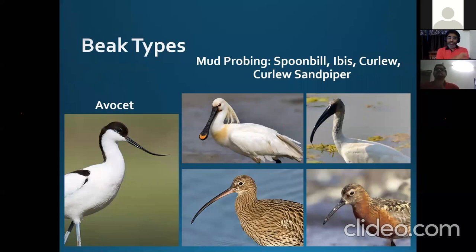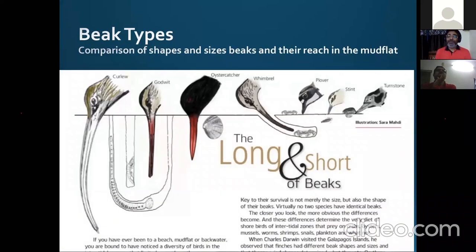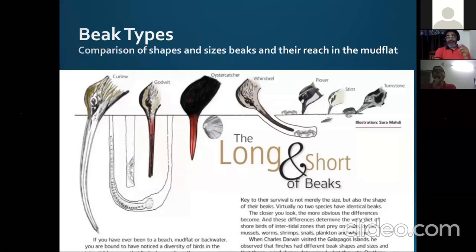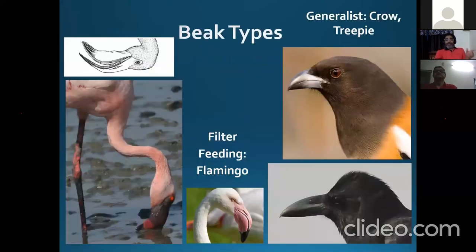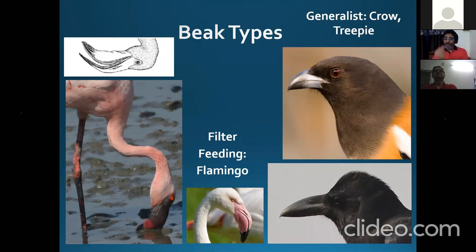Then there are birds which feed by probing into the mud. Even for probing mud they have so many types of beaks. Look at this illustration — it shows the waders, meaning long-legged birds which feed in mud. Look at the length of their beaks and how they can reach to various depths in the mud to reach various animals hiding there. Then there are generalist birds like crows and treepies — omnivores that can feed on anything: roti, water, flesh, everything. Flamingos are a special case — they feed only on micro-algae in water, using a specialized filter-feeding or sieve-feeding beak.